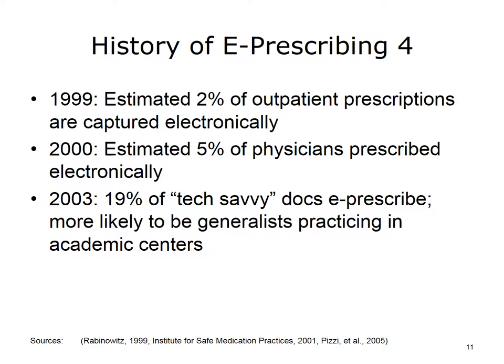During the 1990s, several isolated implementations of e-prescription systems continued, mostly in academic settings. By the end of the 1990s, an estimated 2% of outpatient prescriptions were captured electronically. A year later, at the turn of the century, an estimated 5% of physicians prescribed electronically. And several years after that, in 2003, only really tech-savvy physicians were e-prescribing somewhat regularly, but still at a relatively low rate of only 19%. Those that were e-prescribing were more likely to be generalists practicing in an academic center.